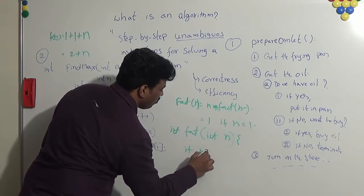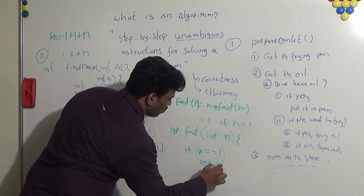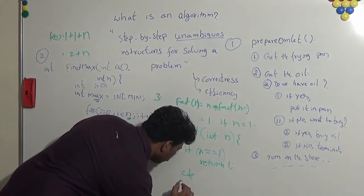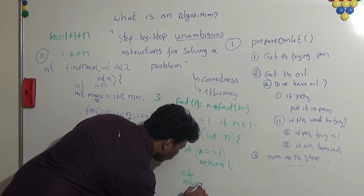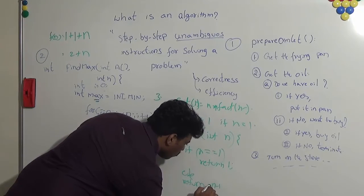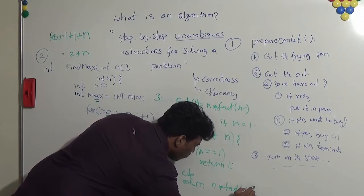So we all know we can simply write the simple code for this one. If n is equal to 1, return 1.